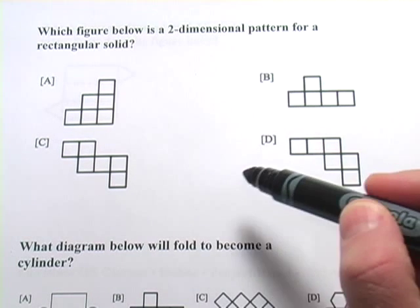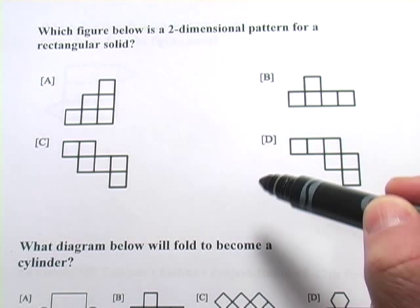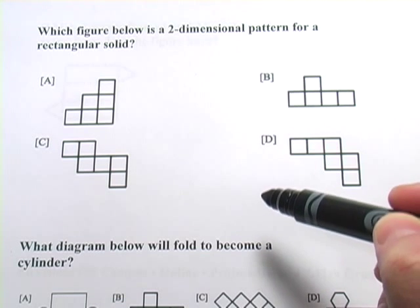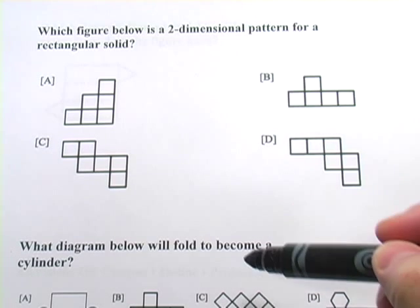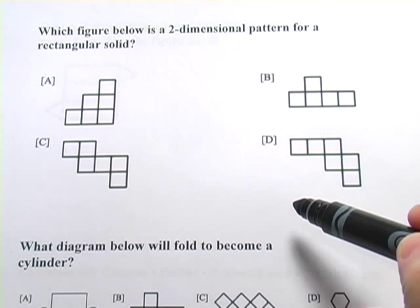Let's look at this first one. It says, which figure below is a two-dimensional pattern for a rectangular solid? So something that you could fold up into either a rectangle, actually in this case, since they're squares, it looks like it might fold up into a cube.